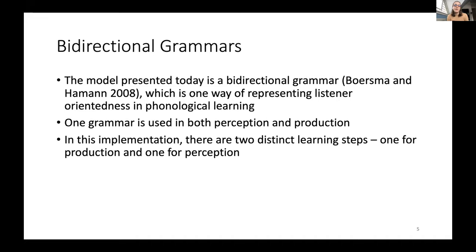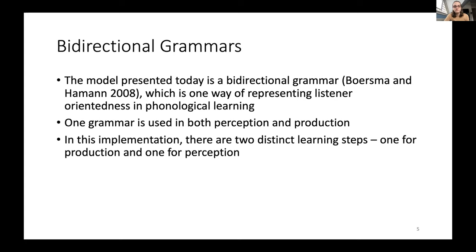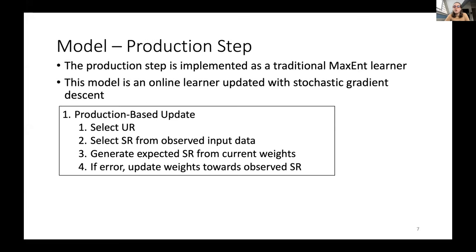The basic point of a bidirectional grammar is that we have one grammar used both in perception and production. I implement this by having two distinct learning steps for learning the weights on the constraints — one in production and one in perception. The basic model is a maximum entropy grammar with lexically indexed markedness constraints, and the lexically indexed constraints allow the model to learn individual rates of application for each word.